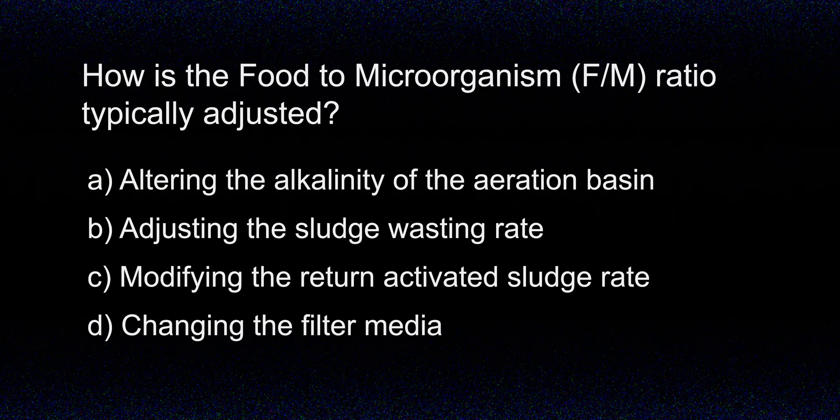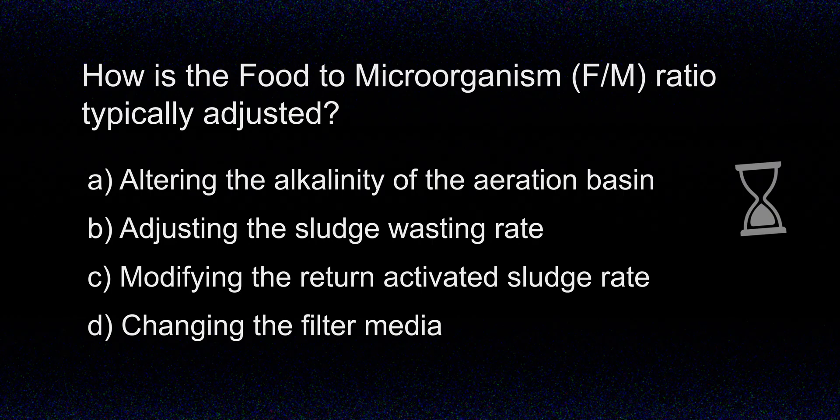How is the food to microorganism ratio typically adjusted? A. Altering the alkalinity of the aeration basin. B. Adjusting the sludge wasting rate. C. Modifying the return activated sludge rate. D. Changing the filter media.